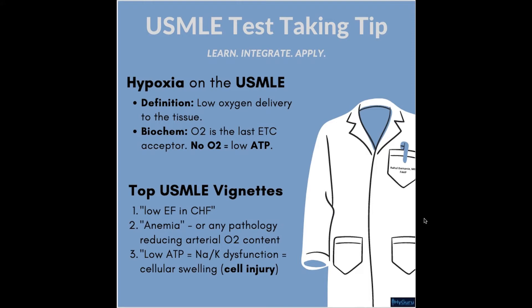Now arterial oxygen content is going to be related to three things: hemoglobin, saturation, and your dissolved oxygen in your blood, which is your PaO2.